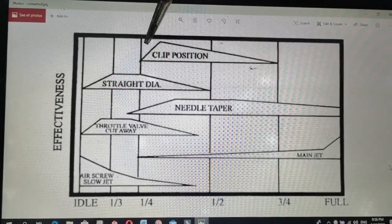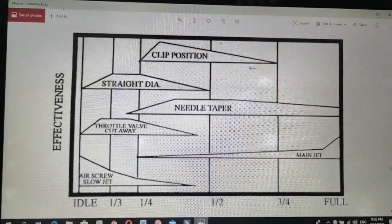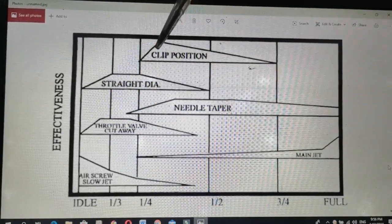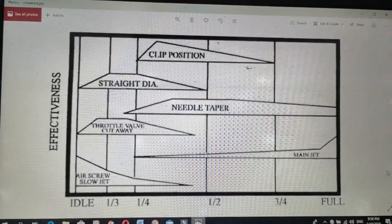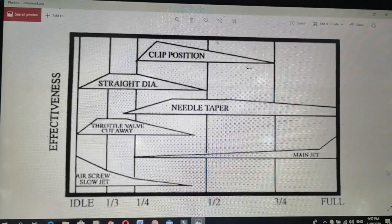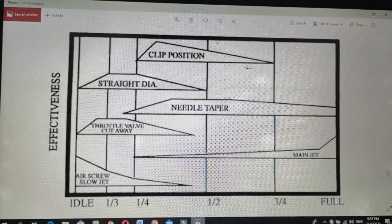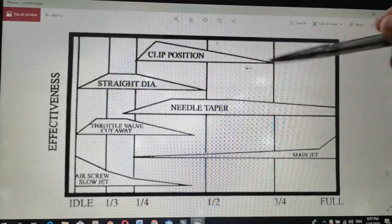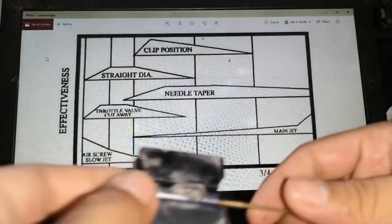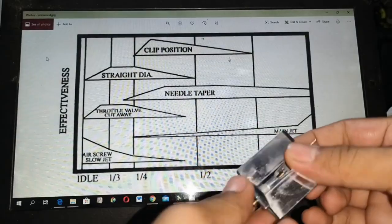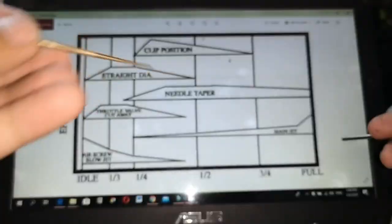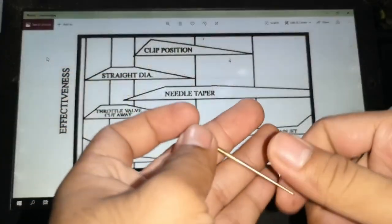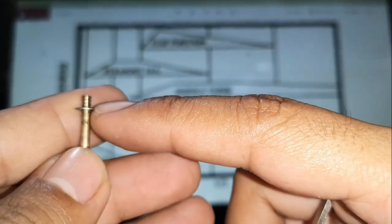So, nakikita nyo from 1/4 papuntang 3/4. Mataas siya. Kapag may hesitation o bog ang RPM sa 1/4 to 3/4 range, ibig sabihin, kailangan mag-adjust sa jet needle or sa clip position ng jet needle. Ito na yan. Jet needle. Yan. Ito ang jet needle. Ito yung clip position. Yan.